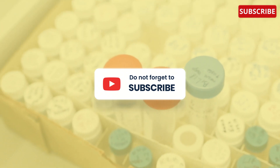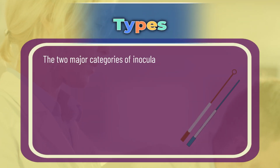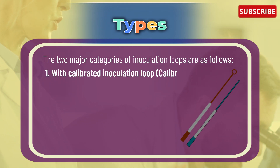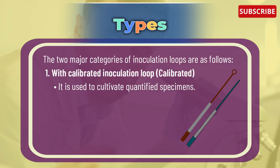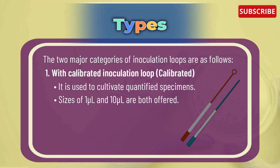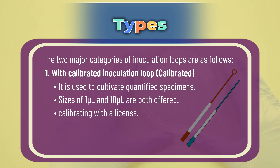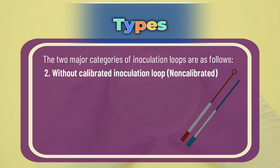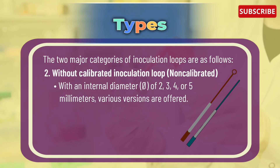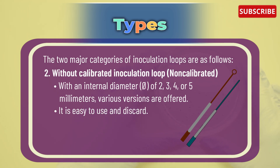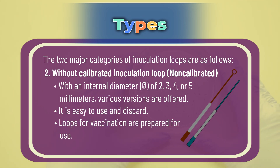Types of inoculating loops and needles: there are two major categories. Number one: the calibrated inoculation loop, used to cultivate quantified specimens; sizes of one microliter and ten microliter are both offered. Number two: the non-calibrated inoculation loop, with an internal diameter of two, three, four, or five millimeters; various versions are offered and it is easy to use.